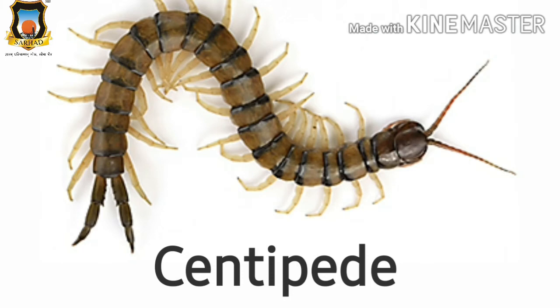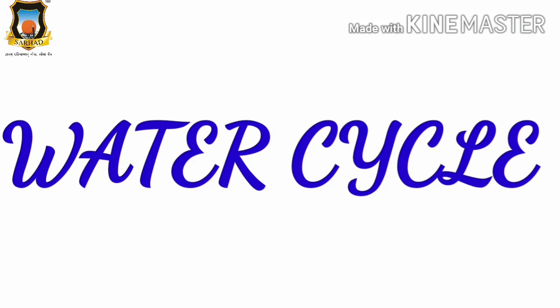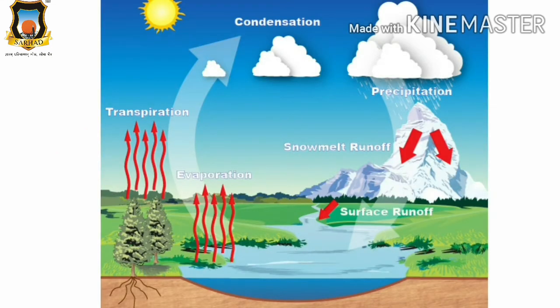Now we will learn the water cycle. What do you mean by water cycle? Where does rain come from? How do clouds form? Now we will learn the water cycle. First — condensation. Condensation means sun rays fall on the water.